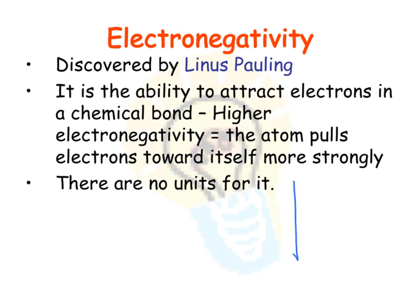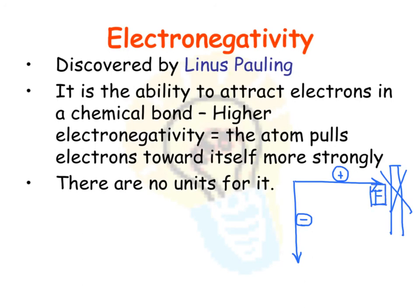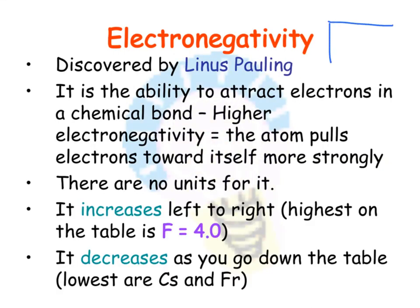The final trend is electronegativity — how much an atom pulls electrons toward itself. It has the same trend as ionization energy: lower as you go down, higher as you go across. Noble gases don't count since they're not pulling electrons at all. The highest electronegativity on the entire table is fluorine, in the upper right corner. The lowest electronegativity belongs to cesium and francium in the lower left. The closer to the upper right corner, the higher the electronegativity.